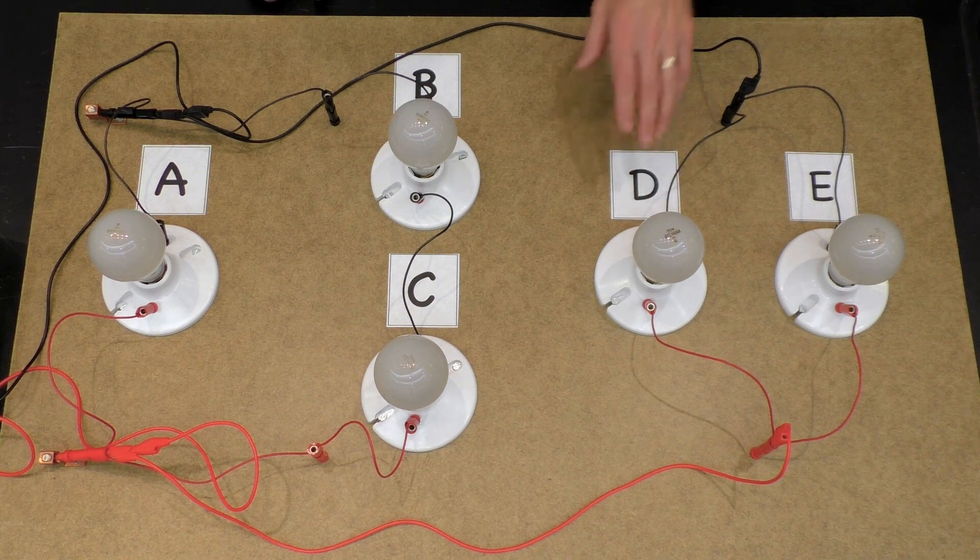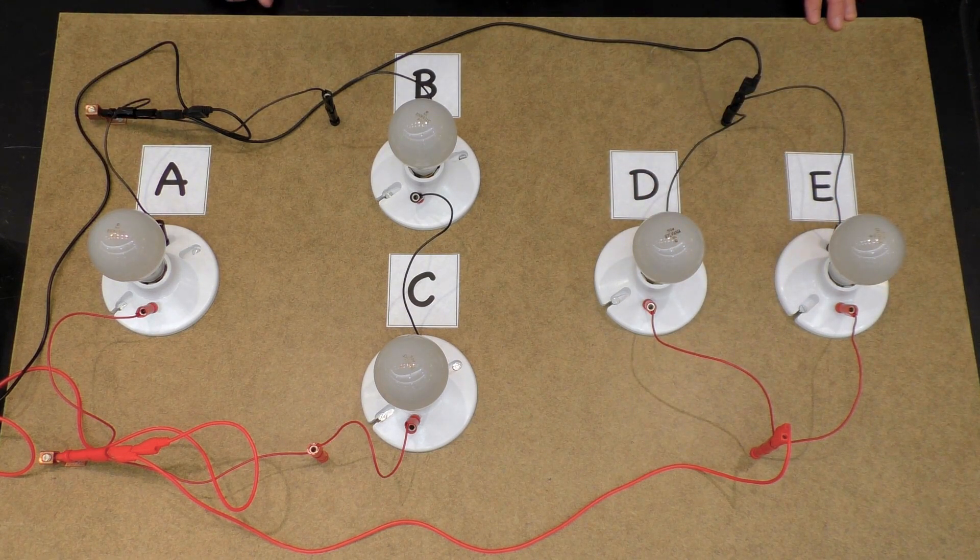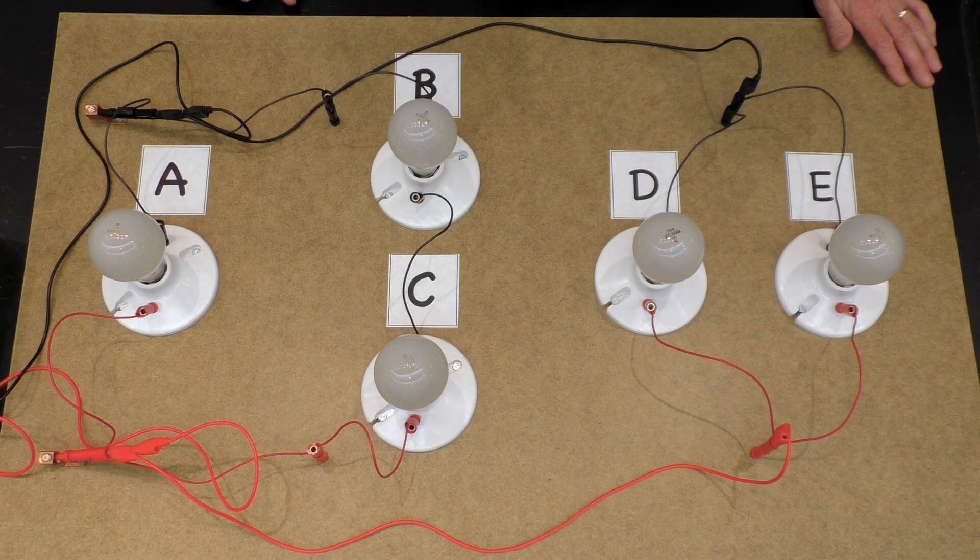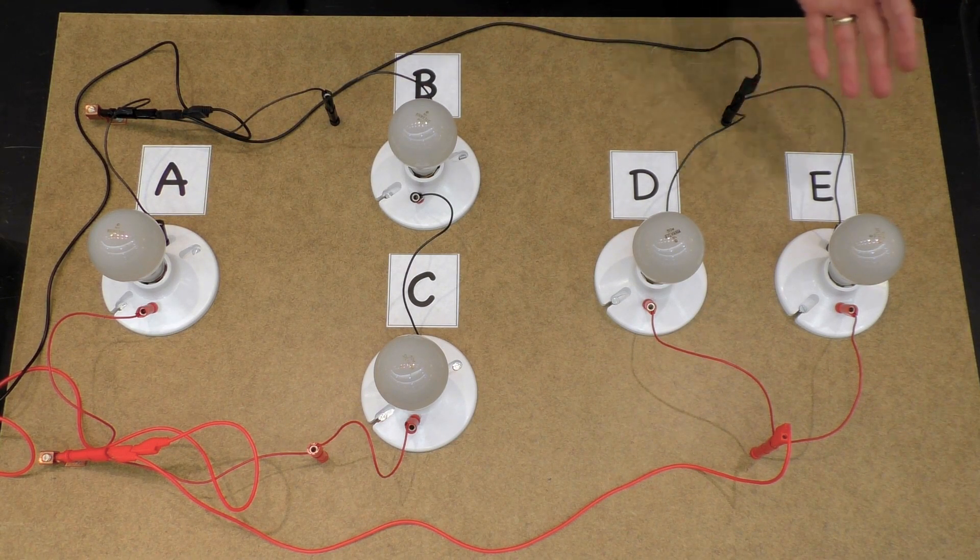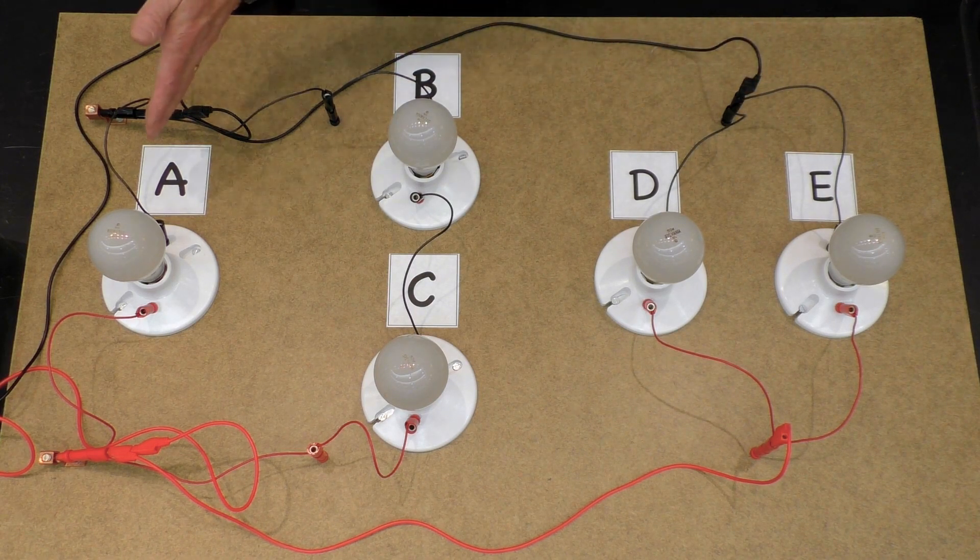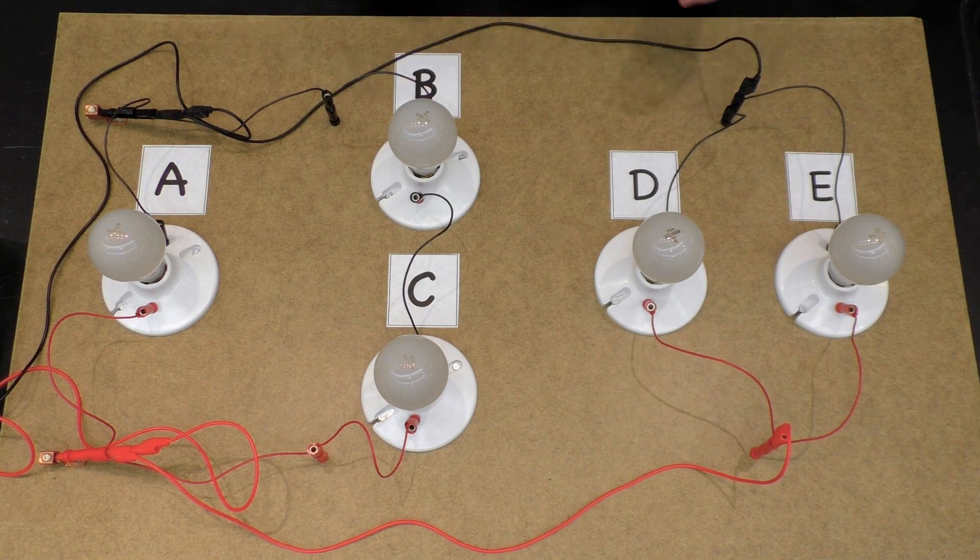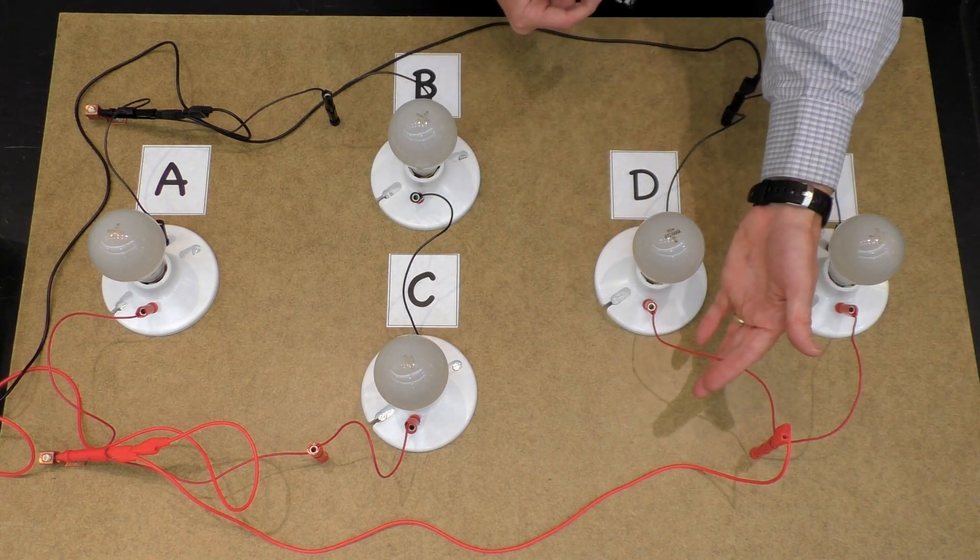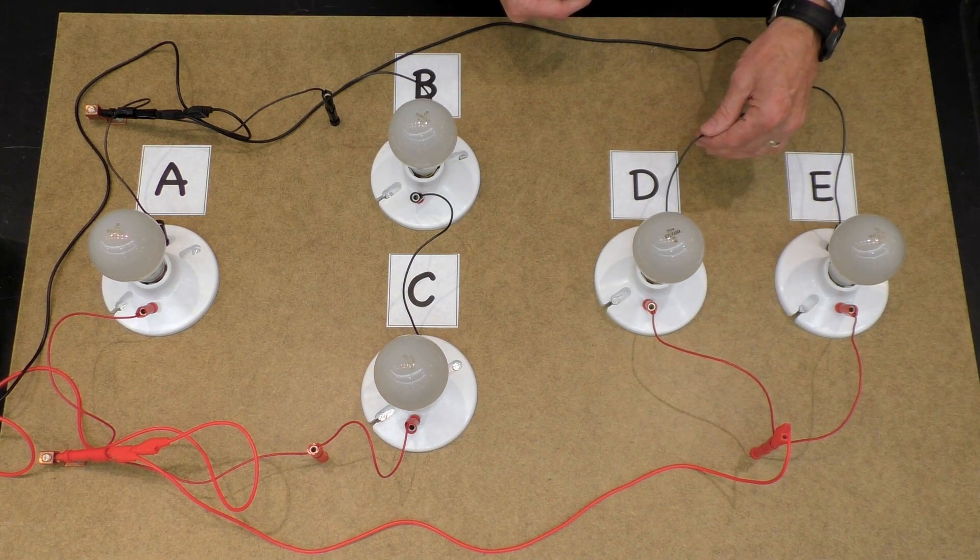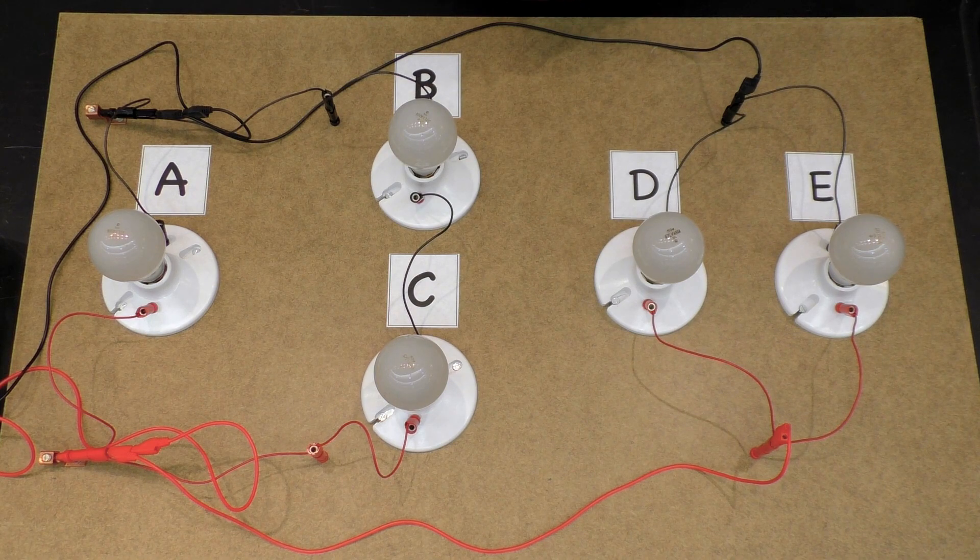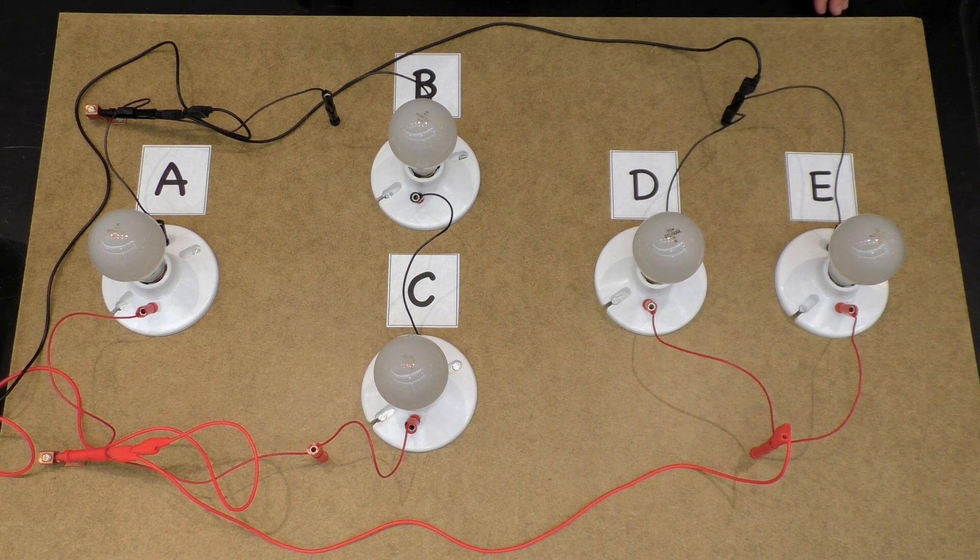And then you might ask, well, how come D and E are burning at the same brightness as A? And the answer there is that these are actually also connected up exactly the same way as bulb A is. Bulb D gets the full 12 volts because it's got a red wire on one side, a black wire on the other side. It gets the full 12 volts of power and so does bulb E.